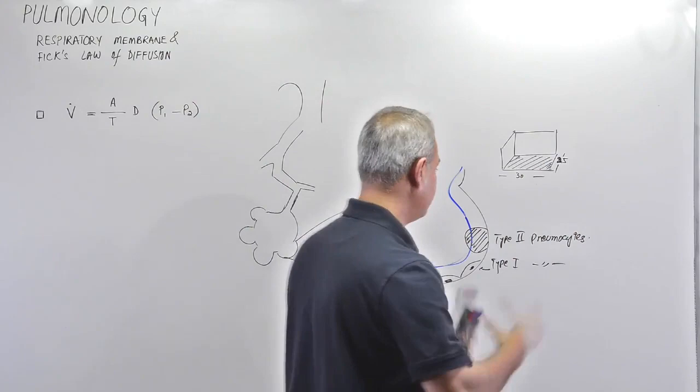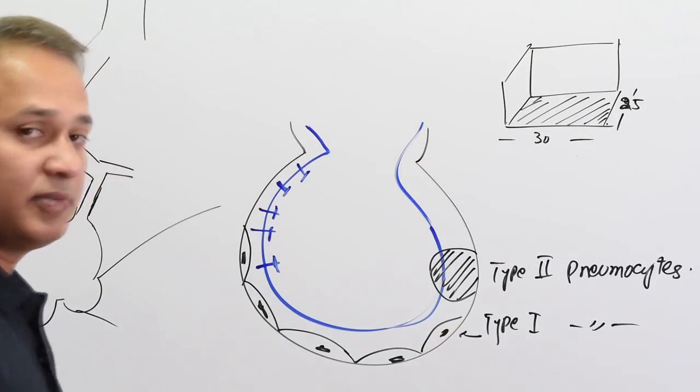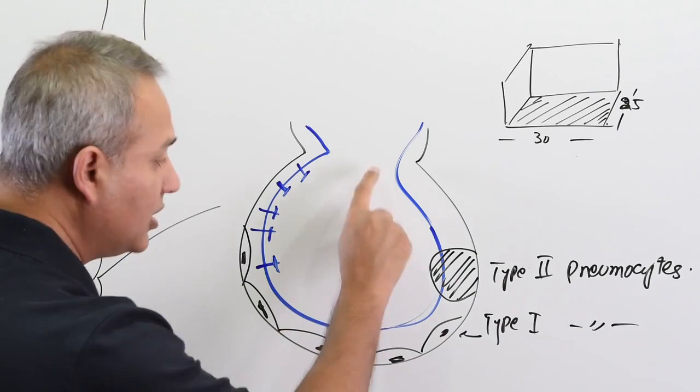Air comes in and exchange happens and air goes out. We exchange about 4 liter of oxygen per minute. So here pneumocyte type 2, pneumocyte type 1.